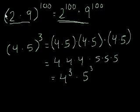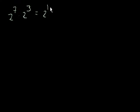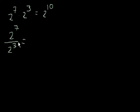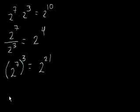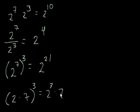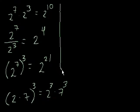Let me review all of the rules again. If I have 2 to the 7th times 2 to the 3rd, I can add the exponents to get 2 to the 10th. If I have 2 to the 7th over 2 to the 3rd, I subtract the exponents and get 2 to the 4th. If I have 2 to the 7th to the 3rd power, I multiply the exponents to get 2 to the 21st. And if I have 2 times 7 to the third power, that equals 2 to the third times 7 to the third.